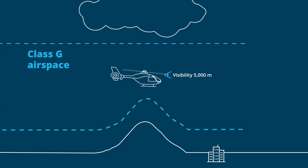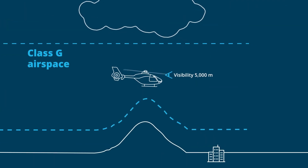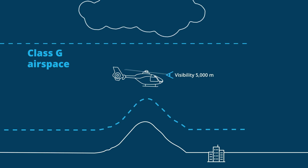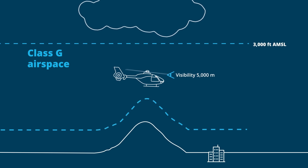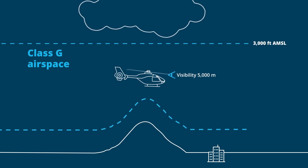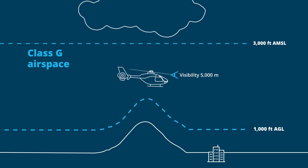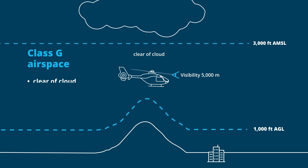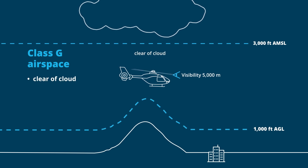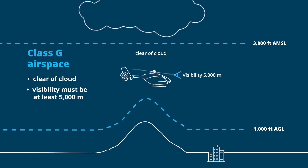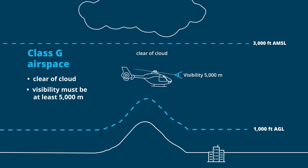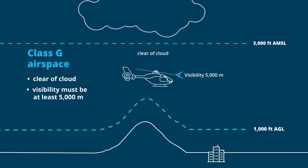In class G, at or below whichever is higher — 3,000 feet AMSL or 1,000 feet AGL — you must be clear of cloud with visibility of 5,000 meters.